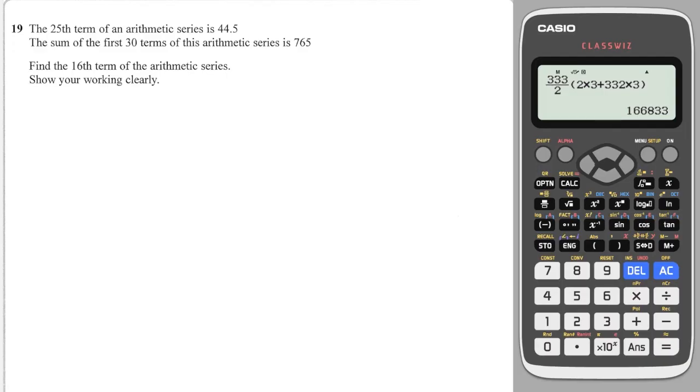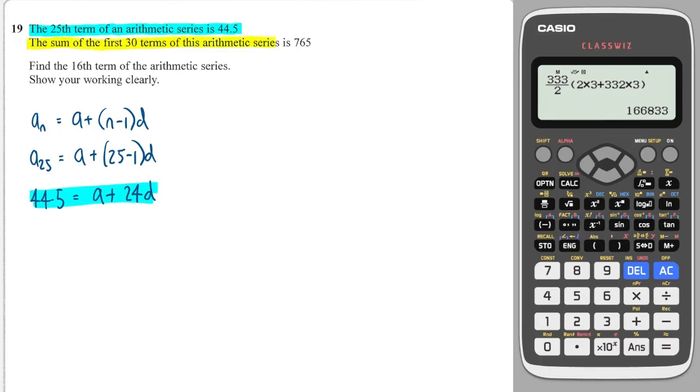Okay, here's a really standard question. It says the 25th term of the arithmetic sequence is 44.5. Well, you're going to have to use the nth term formula, which is the term in the nth position is equal to the first term plus n minus 1 multiplied by d. So using this information, the term in the 25th position is equal to the first term plus 25 minus 1 times d. And we're told that this is equal to 44.5. So that's equal to a plus 24d. And that gives us one equation.